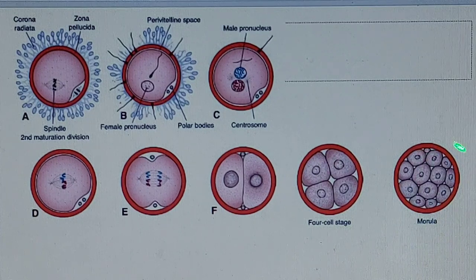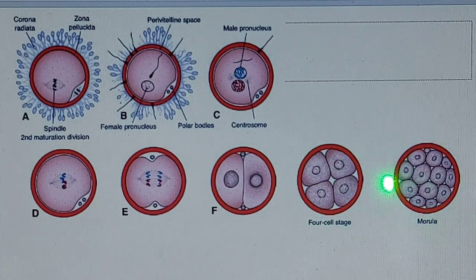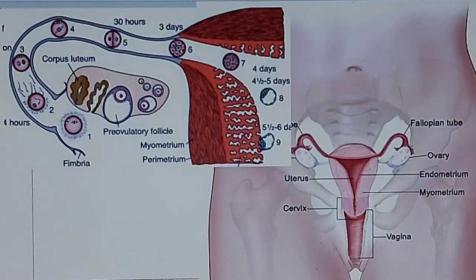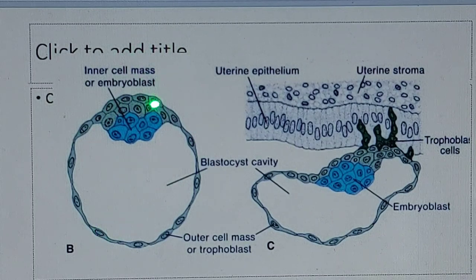Before the formation of the blastocyst, they pass through many stages: the two-cell stage, four-cell stage, eight-cell stage. After the 16-cell stage, this is known as the morula. This morula enters a phase of reactions where two forms of cells develop — that is an outer cell mass and an inner cell mass.